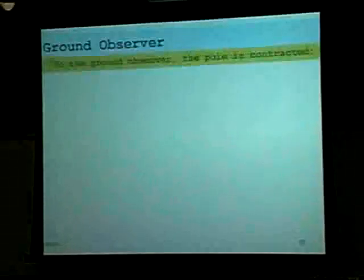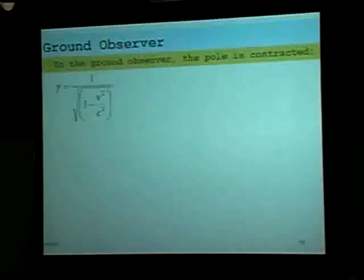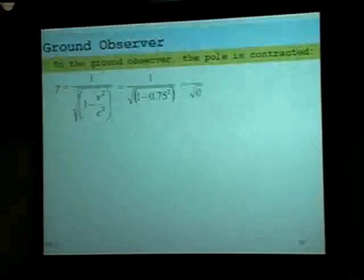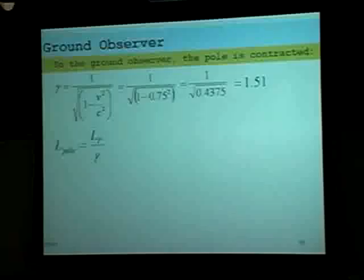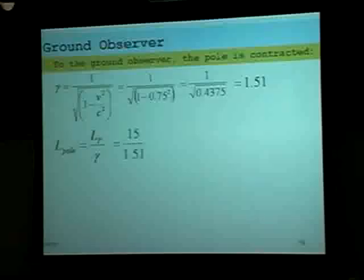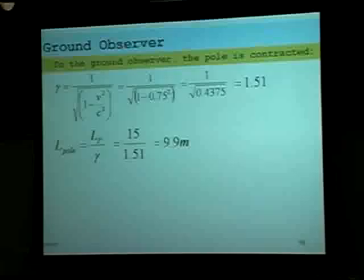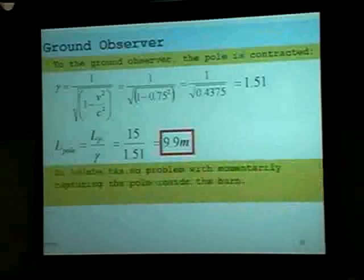Here's the ground observer's analysis. The value of gamma, if you're moving at 0.75c, is 1 over the square root of 1 minus 0.75 squared, which comes out to 1.51. So the pole to the ground observer — the moving pole in the direction of motion — is equal to the proper length divided by gamma: 15 meters divided by 1.51, meaning the pole is 9.9 meters long. And if the barn is only 10 meters long, the pole should be able to fit within the barn. So according to the ground observer, there's no problem with momentarily capturing the pole inside the barn.